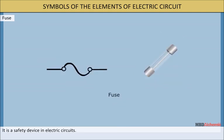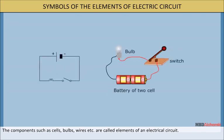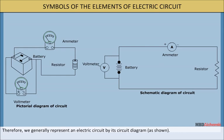A fuse is a safety device in electric circuits. Components such as cells, bulbs, wires, etc. are called elements of an electrical circuit. The various components of the circuit are represented by standard circuit symbols. It is much easier to draw a circuit diagram using symbols; therefore, we generally represent an electric circuit by its circuit diagram as shown.